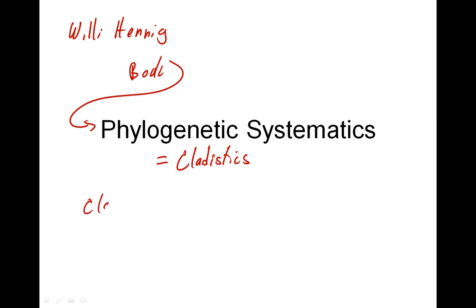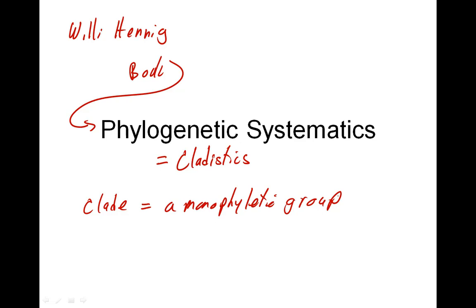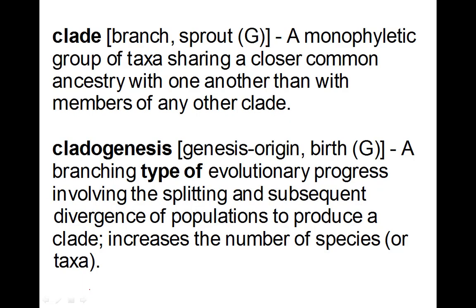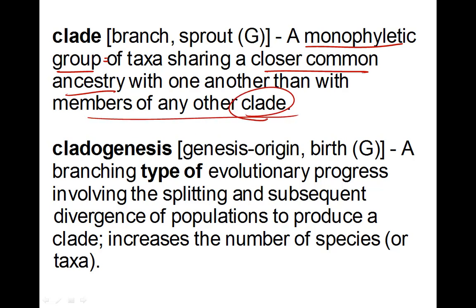We need to understand what a clade is. Basically, a clade is a monophyletic group, as defined by the cladists. It's a monophyletic group in the sense we've been using all this semester: a group of taxa that all descend from a common ancestor, and which includes all the descendants of that common ancestor. A monophyletic group is a group of taxa sharing a closer common ancestor with one another than with members of any other clade or monophyletic group.